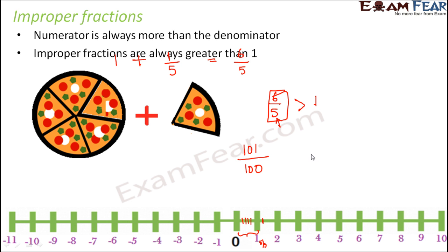So any improper fraction, whether it is twenty-one by nineteen, whether it is six by four, or it is two one zero zero one three divided by three, any improper fraction that comes to your mind is going to be greater than one.